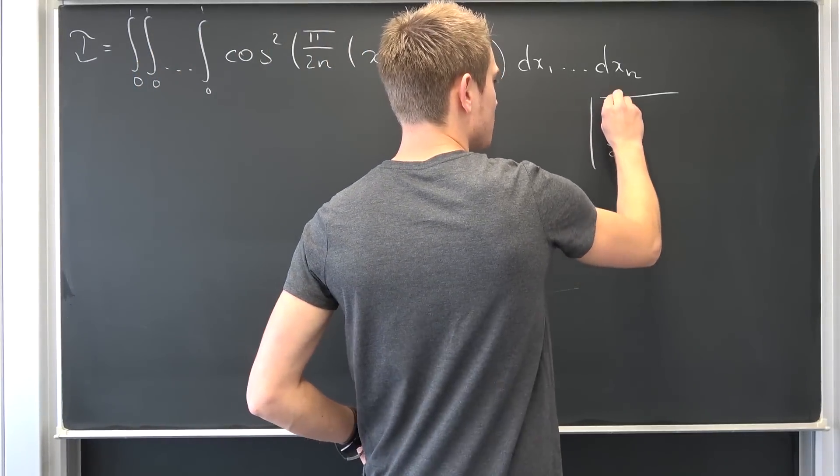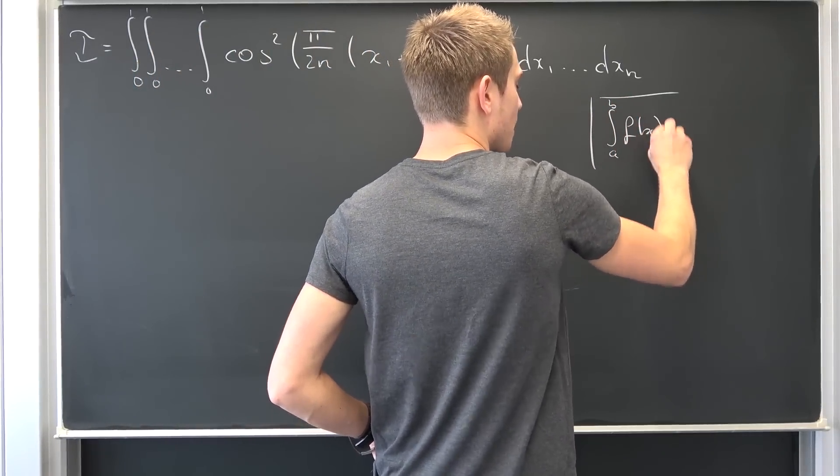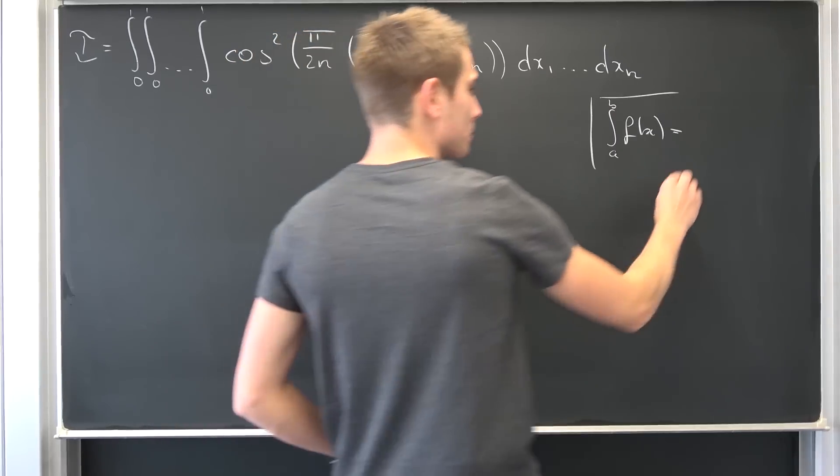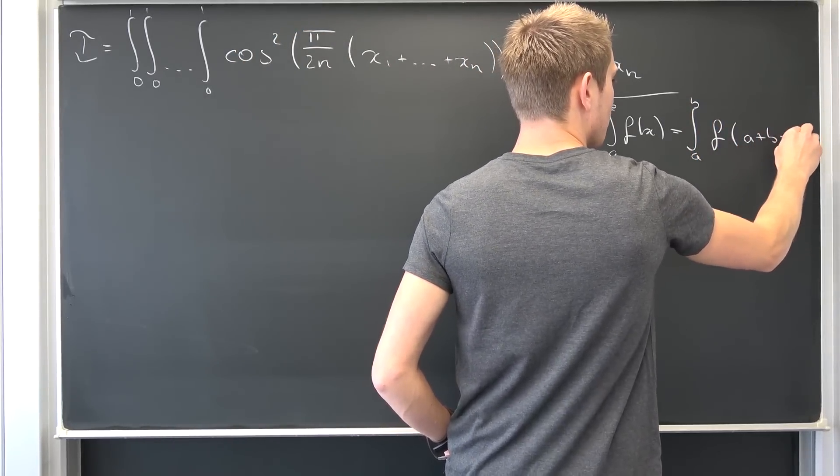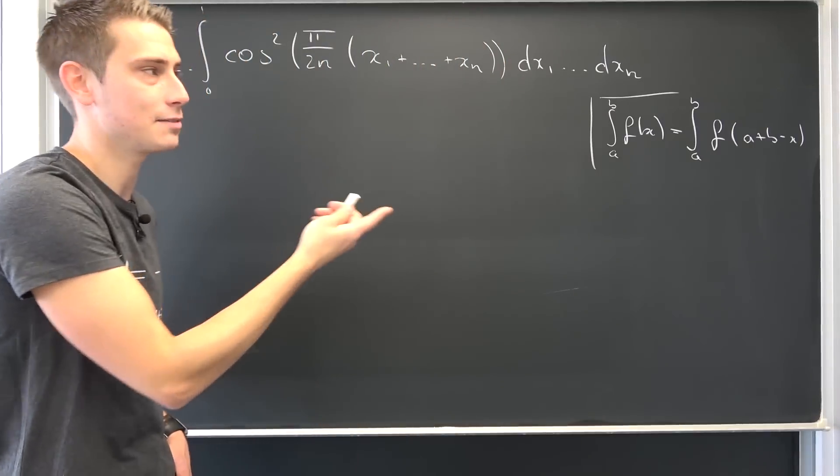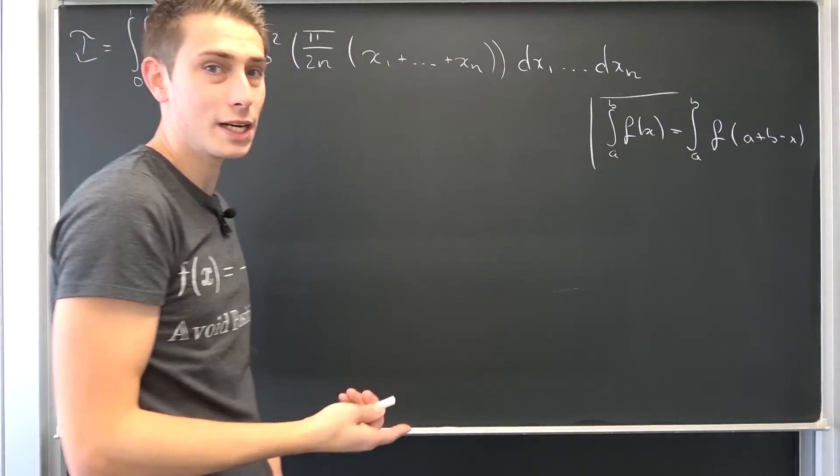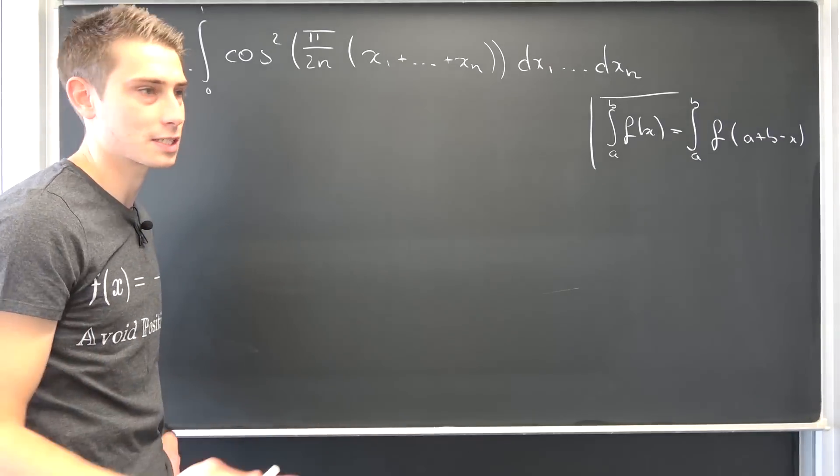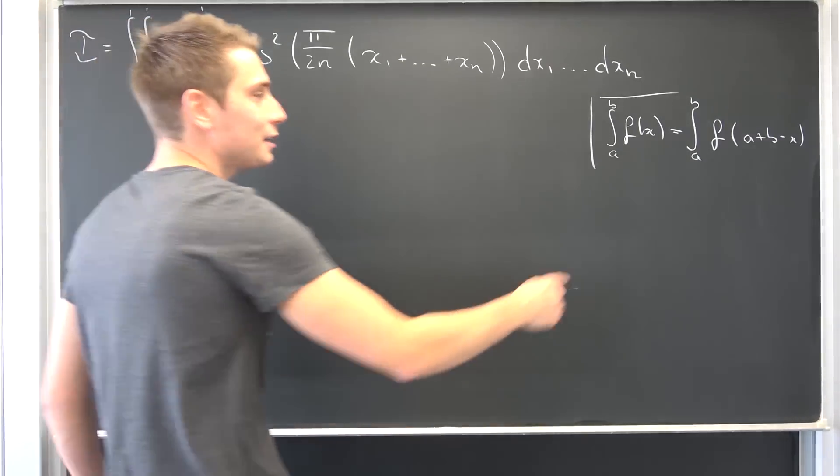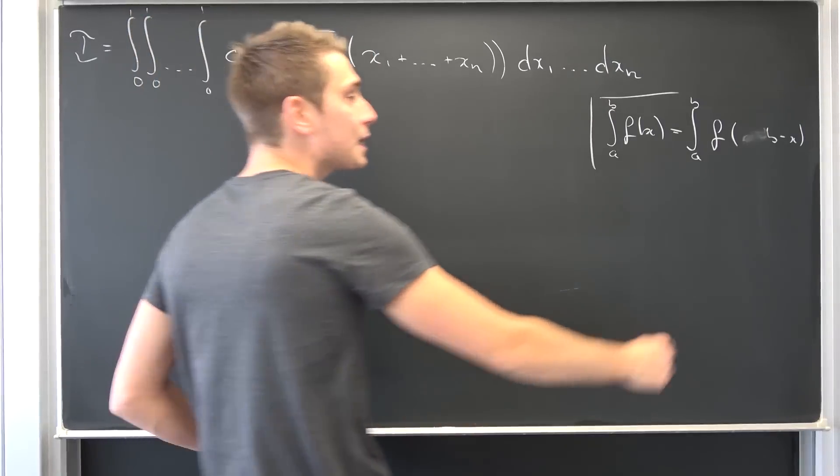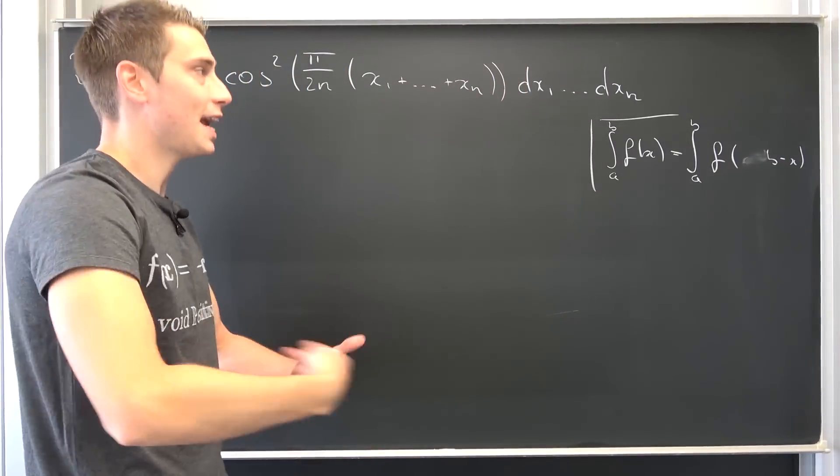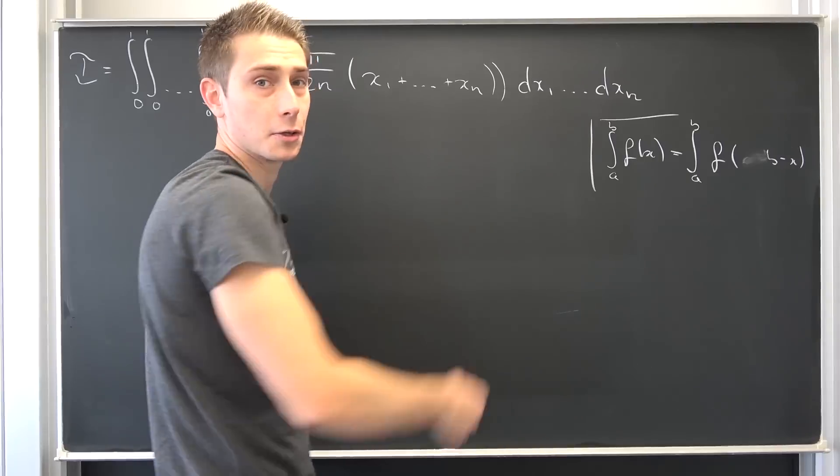If we have an integral from a to b of f of x, this is actually the same as the integral from a to b of f of a plus b minus x. It's easily verifiable just by introducing simple substitutions. a is zero in our case, meaning we are simply going to end up with b minus x. And we are going to do the substitution n times on each and every variable.